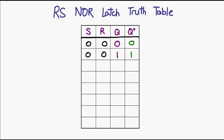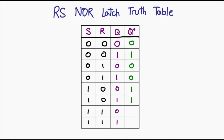When we perform a set operation, no matter what the current state of the latch is, the state of the latch should be changed to one. The exact same deal for reset — you can disregard the original state; all you have to do is set the final state to zero. This leaves us with an input combination we haven't discussed: what happens if both inputs were one? This is where a problem arises.